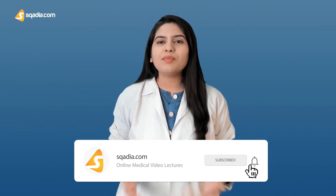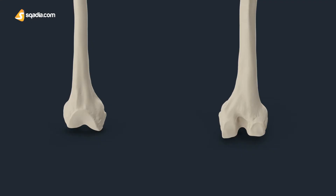While discussing the prominent features, the patellar surface is the groove where the bone adjoins with the patella or kneecap and forms the knee joint at the distal part. At the end of the femur, medial and lateral condyles are present as rounded areas. The posterior and inferior surface articulate with the tibia and menisci of the knee, while the anterior surface articulates with the patella.